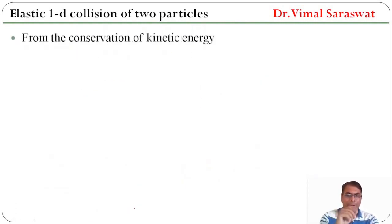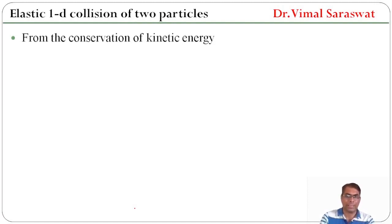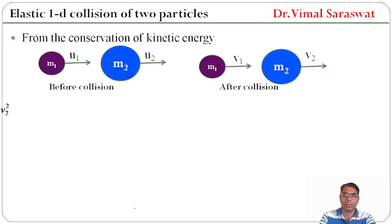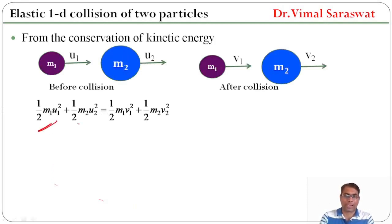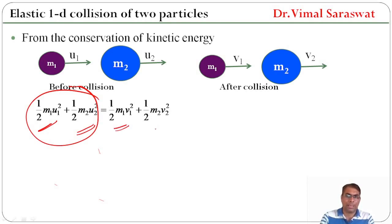From the conservation of kinetic energy, kinetic energy is half Mv². So from the conservation of kinetic energy, the total kinetic energy before collision will be equal to the total kinetic energy after collision. So ½M1·U1² + ½M2·U2² = ½M1·V1² + ½M2·V2². This is the total kinetic energy before collision, and this is the total kinetic energy after collision.